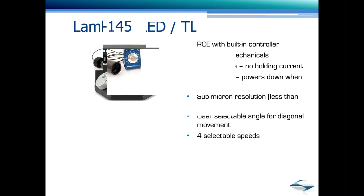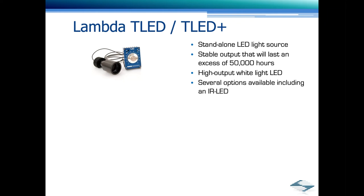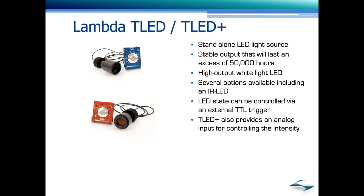Next is a transmitted light source, which is powered by a Lambda TLED. The TLED is a standalone LED light source. Has stable output that will last an excess of 50,000 hours. Has a high output white light LED. There are several options available, including an IR LED. The LED state can be controlled by an external TTL trigger, as provided by a Sutter Patch software, for example. The TLED Plus also provides an analog input for controlling the intensity. We also have a TLED DC, which is a dual channel TLED Plus that combines two high power LEDs into a single light path.